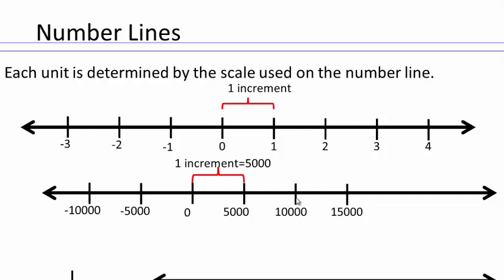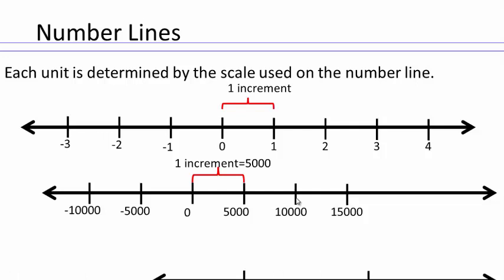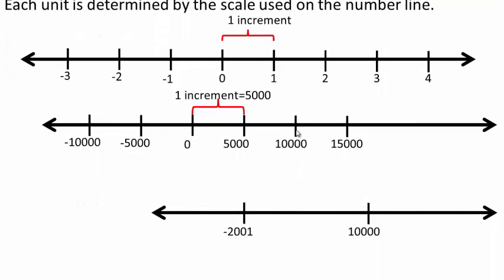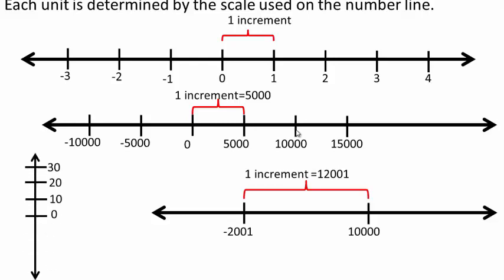Let's take a look at what if my reference point is negative 2,001 and the next tick mark I plot is 10,000. Then I'm choosing an increment of 12,001, and I will have to go accordingly left and right. So see if you can plot a tick mark to the left of negative 2,001.